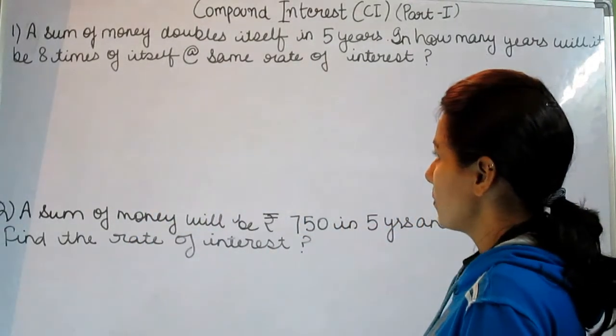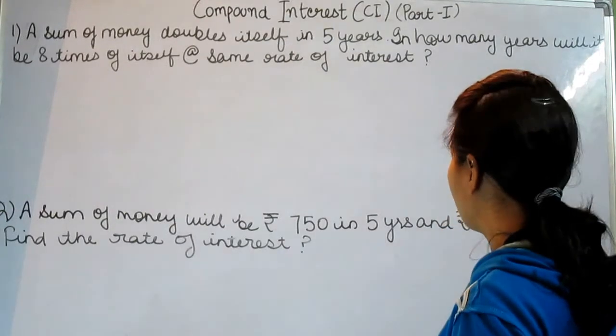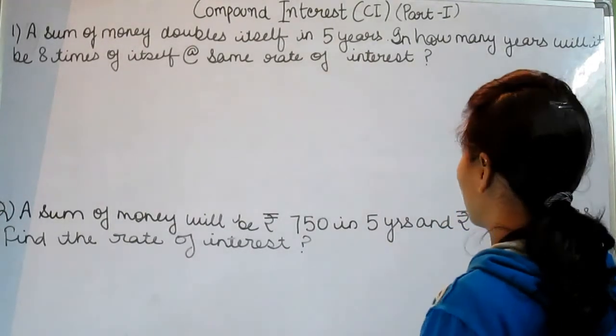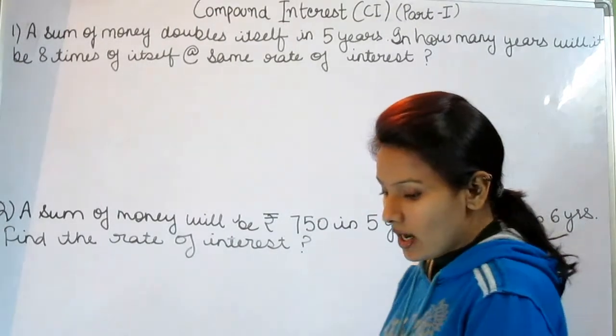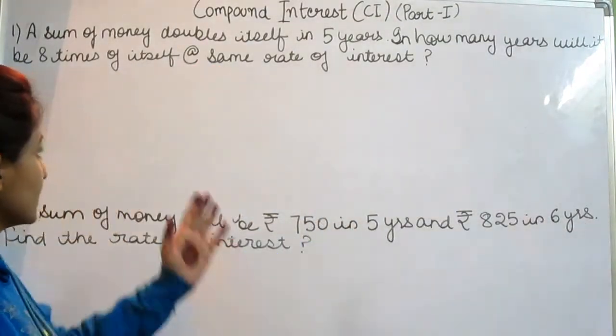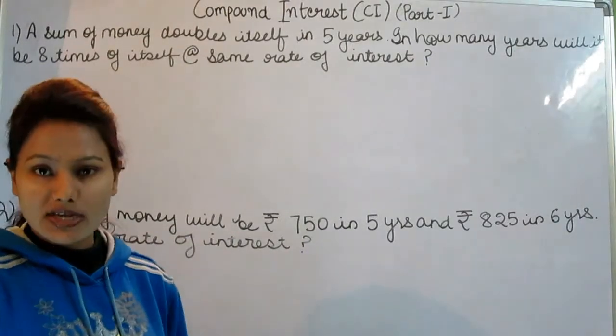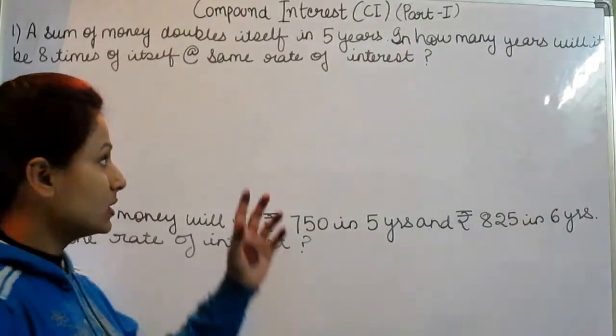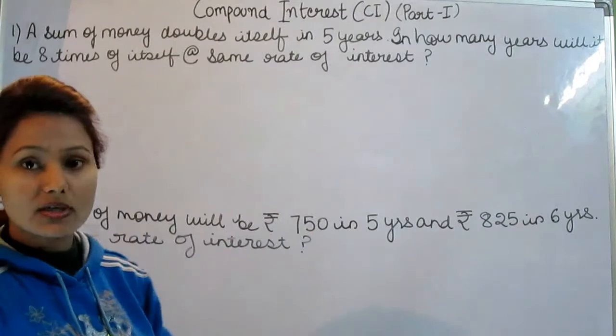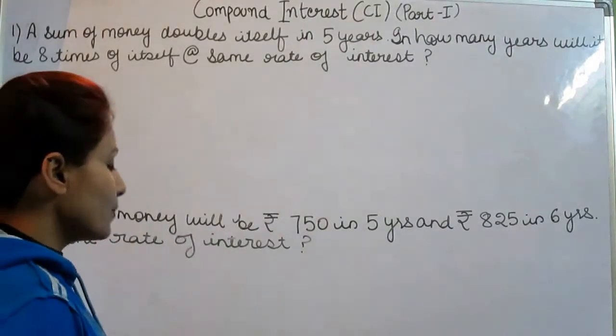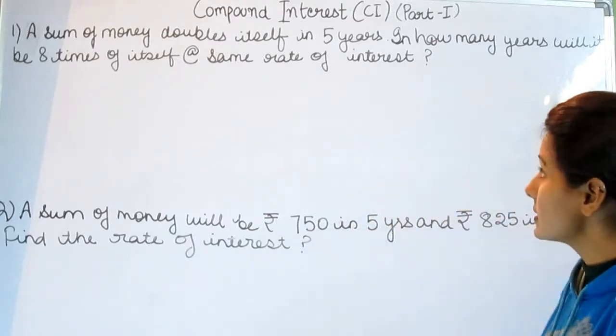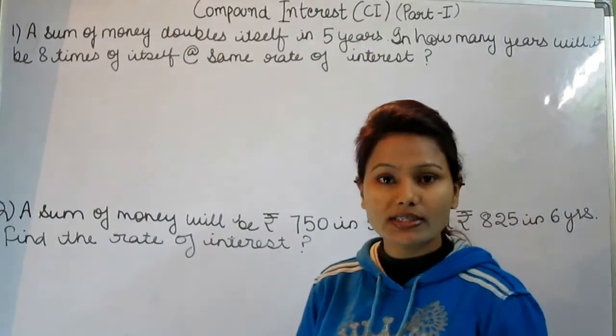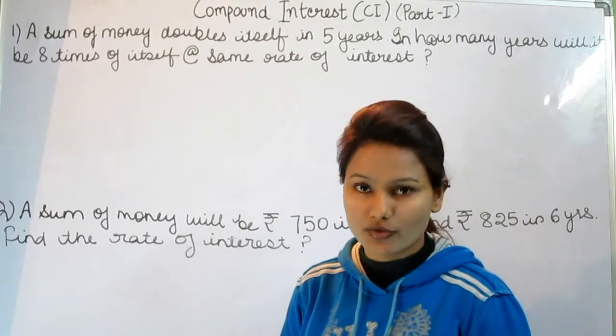Our first question is a sum of money doubles itself in 5 years. In how many years will it be 8 times of itself at the same rate of interest? If you remember we have done this type of problem in simple interest as well. But the difference between simple interest and compound interest is simple interest is always calculated on principal, whereas compound interest is always calculated on amount.